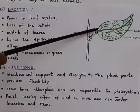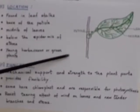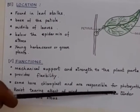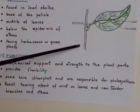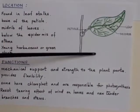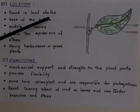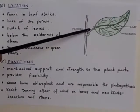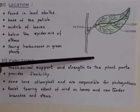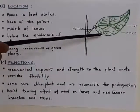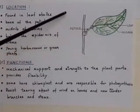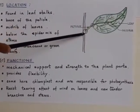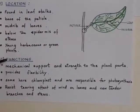They are present in these places because of their function — they resist the tearing effect of wind on leaves and new tender branches and stems. If there is a storm, the leaf or branch will start fluttering. If these cells were not present, the leaf would tear off even with the slightest breeze. So, to prevent the leaf or branch from breaking or tearing, the colenchyma cells are present in these locations.